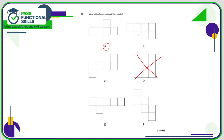Net B does not work because both extra squares are below. If they're both below or both above, you can't fold it into a cube — so B does not work. Net C is similar: we've got four in a line, one above and one below. It doesn't matter exactly where above or below those squares are — as long as one is above and one is below, it makes a cube.